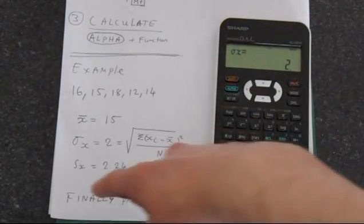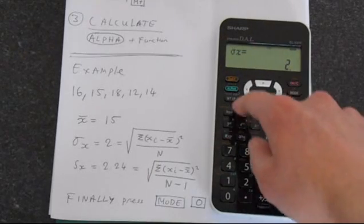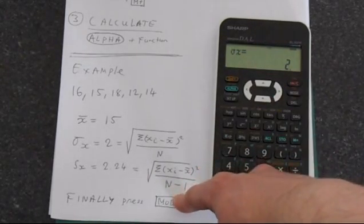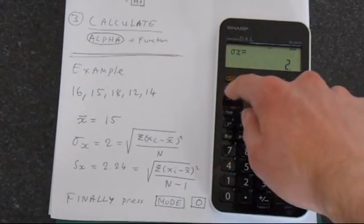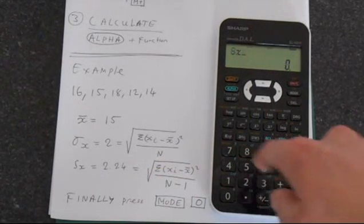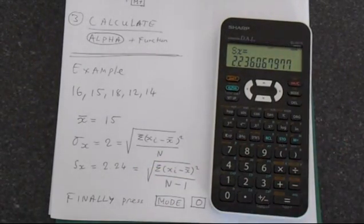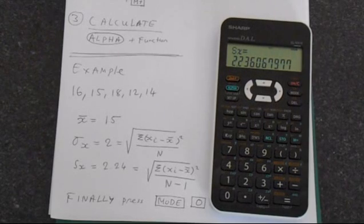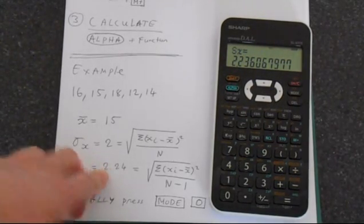And lastly we'll calculate sx which is the n minus 1 definition of the standard deviation. So press alpha and then sx which is above the number 5, equals, and that gives us 2.236 which rounds to 2.24.